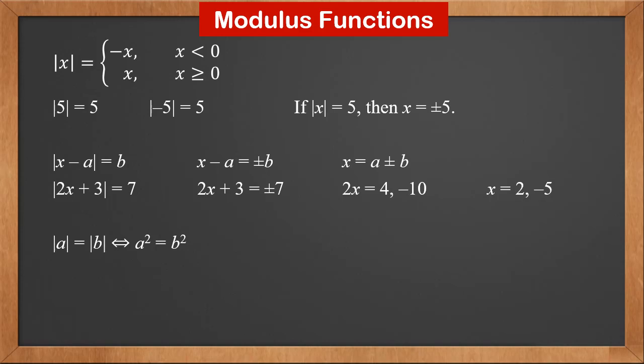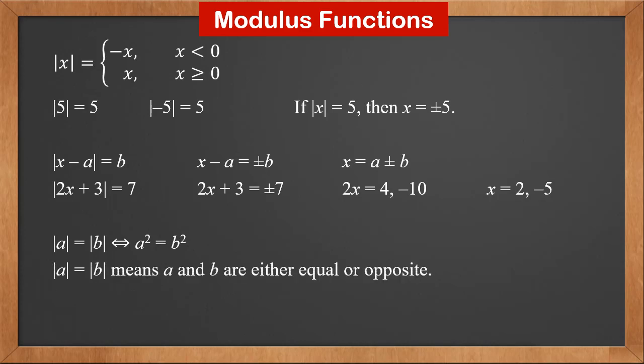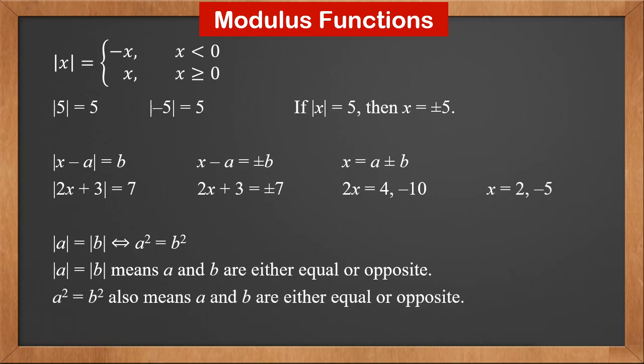|a| = |b| is equivalent to a² = b². This is because |a| = |b| means a and b are either equal or opposite, and a² = b² also means a and b are either equal or opposite. Therefore these two statements are equivalent, and we'll use this to solve modulus equations later.